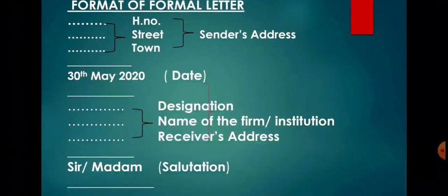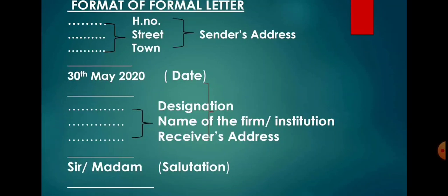Now look at the format of a formal letter. A formal letter has the sender's address on the top of the left hand side, followed by the date you are writing the letter on. Then the receiver's address is written. Always keep in mind that the sender is the person writing the letter and the receiver is the person being addressed.